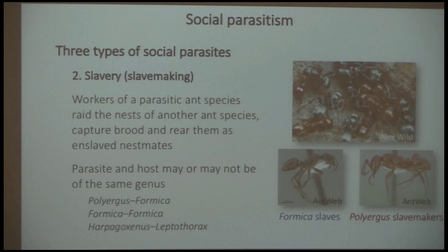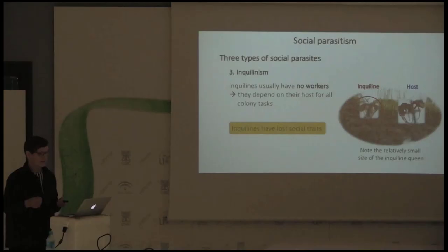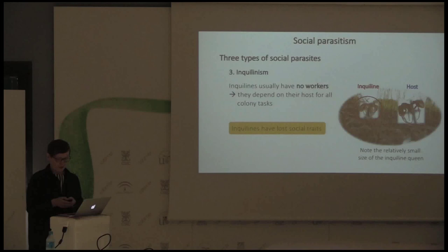The third type of social parasitism is inquilinism. These inquilines usually have no workers and thus depend on the host for all colony tasks. Since workers were crucial for social traits, inquilines have lost most of those traits and can be considered secondarily non-social. The rest of this talk will concentrate on inquilines.